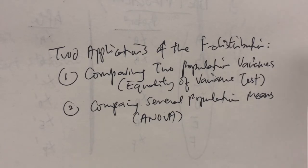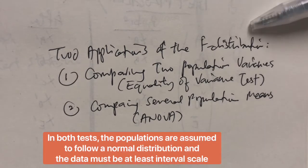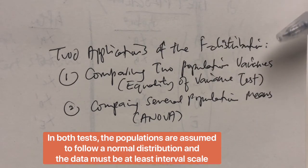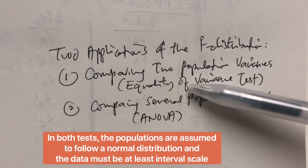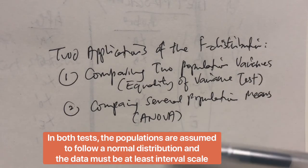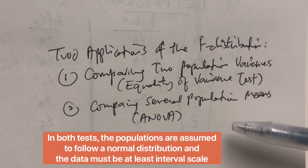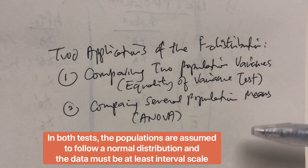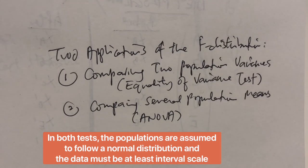So as for the applications of the F-distribution, it's actually used in many different types of tests. But for the purpose of our lectures, we will only be learning two of those tests. The first test that uses the F-distribution is where we want to compare two population variances. So this test is also known as the equality of variance test. Secondly, we also use the F-distribution where we want to compare several population means simultaneously, that means at the same time. So this type of test is known as the analysis of variance, or ANOVA.